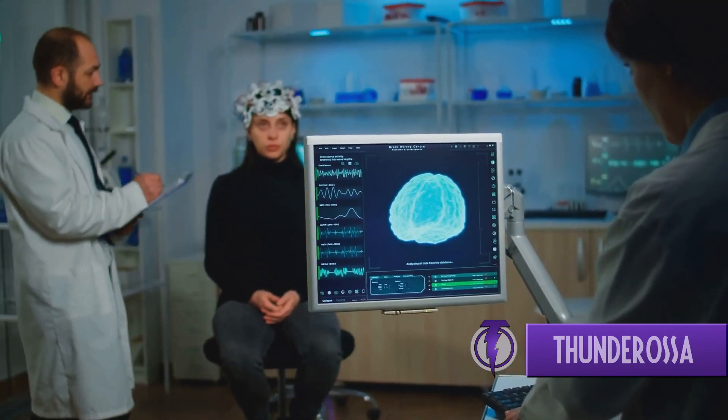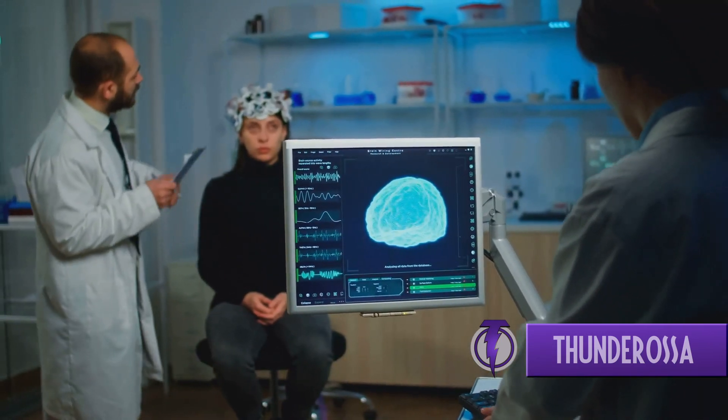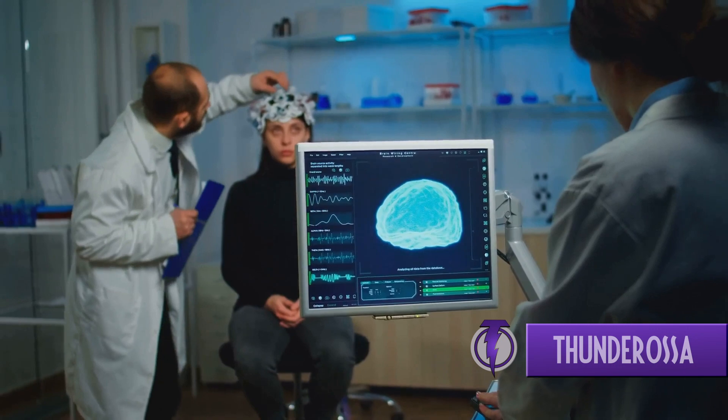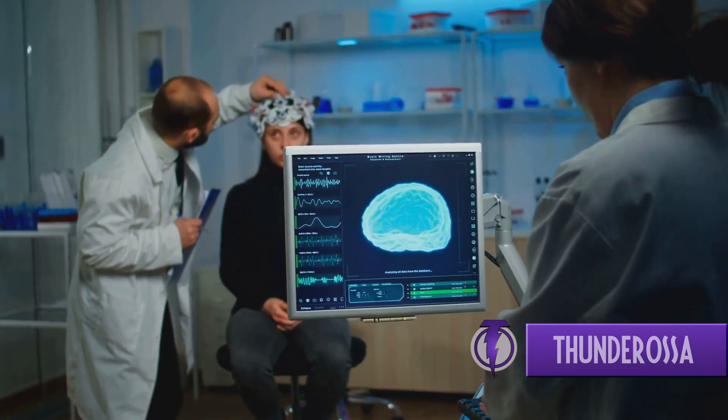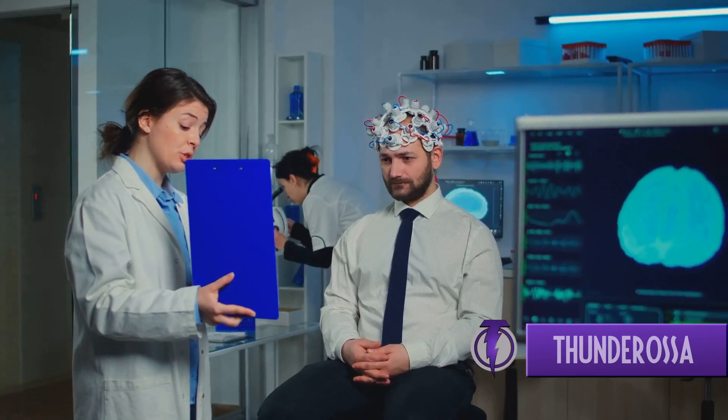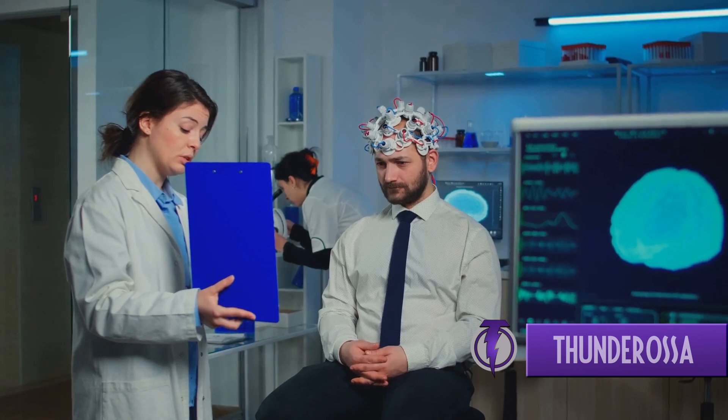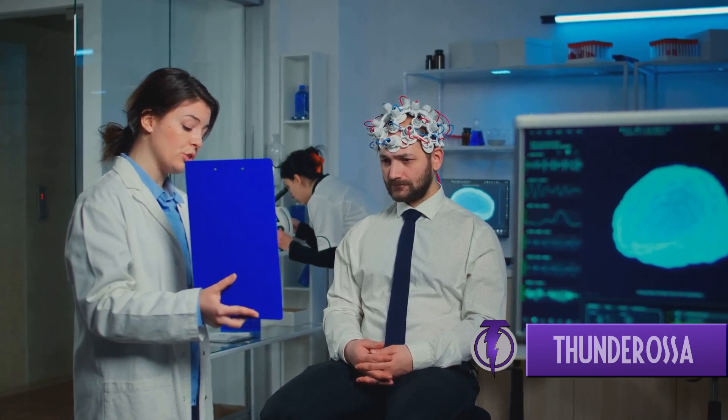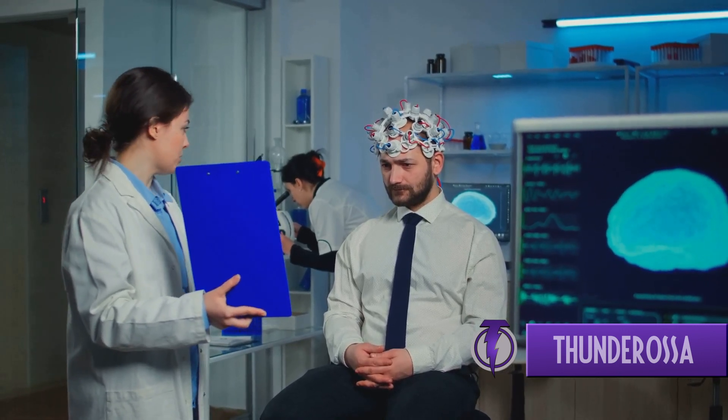The nervous system, a complex network of nerves and cells, holds the answer. Let's dive right in. Imagine the nervous system as a vast, intricate highway, bustling with information. This highway is split into two main parts, the central nervous system and the peripheral nervous system.